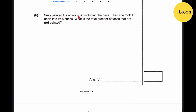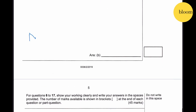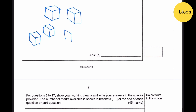Question 5b: Suzy painted the whole solid including the base, then took it apart into its 5 cubes. What is the total number of faces that are not painted? If we take that apart, we have 5 cubes, and counting the unpainted faces: 1, 2, 3, 4, 5, 6, 7, 8, 9, 10. So 10 faces are not painted.